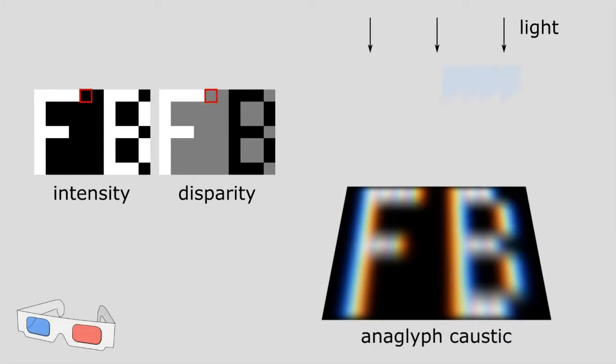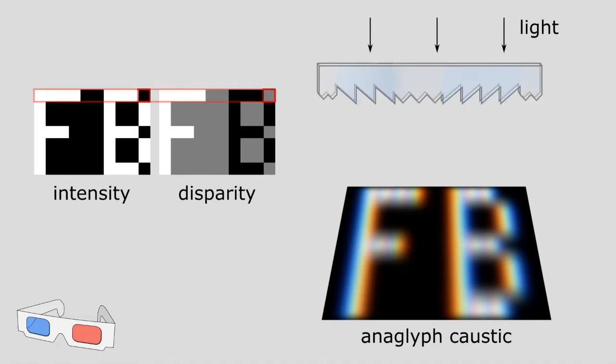For each input pixel, we compute a prism. A zigzag pattern is inserted into the gaps, blocking the light via total internal reflection.